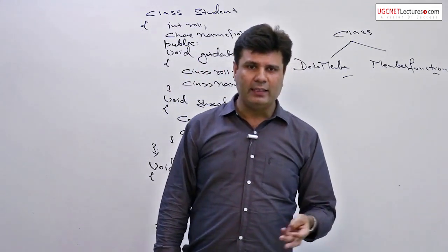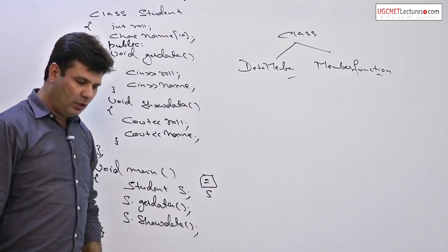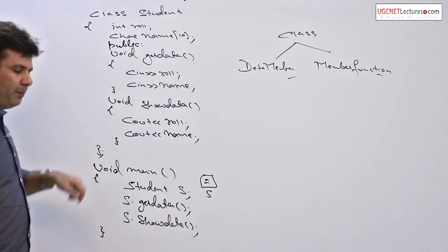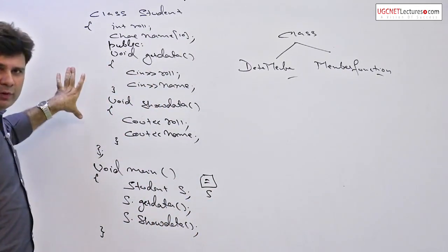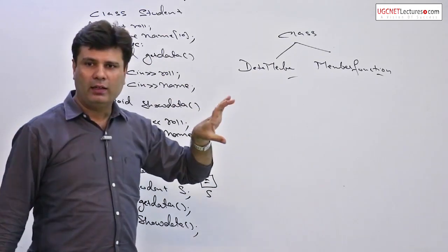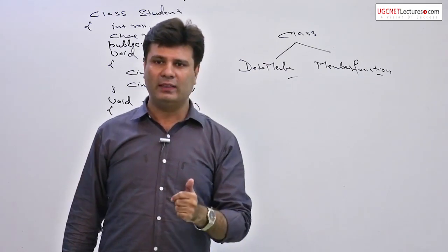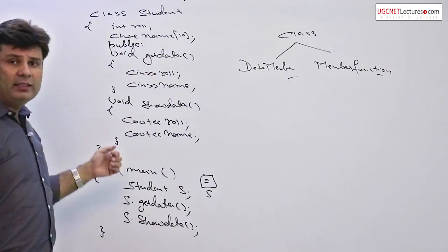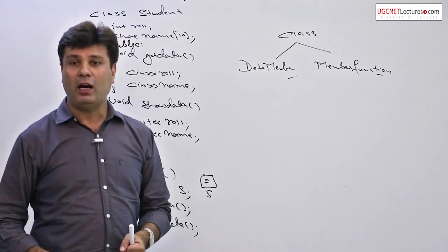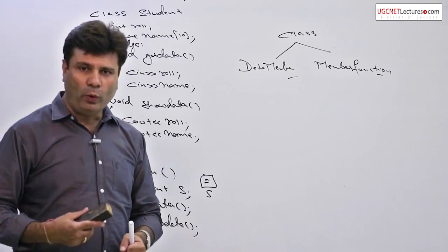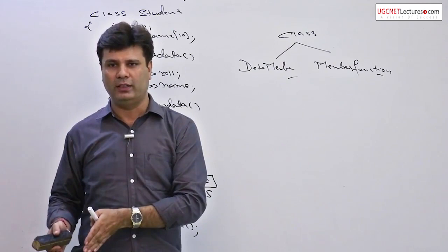Inheritance and polymorphism we will discuss in the next example. Now let us go back to classes and objects. The member functions get data and show data are defined within a class. Member functions can be defined in two different ways: first, within a class, which we just did; and second, outside a class. Let us see how member functions can be defined outside a class, and then we will discuss the difference.